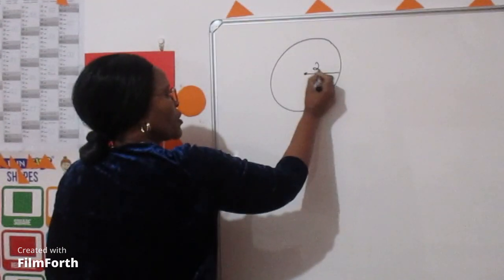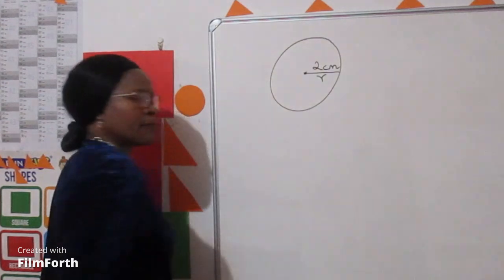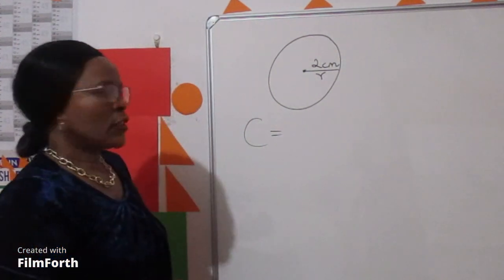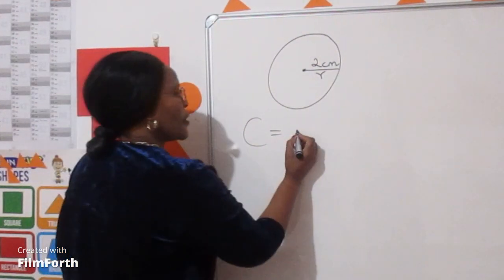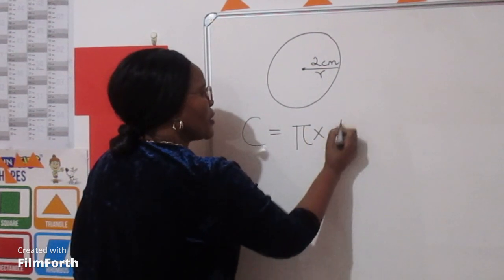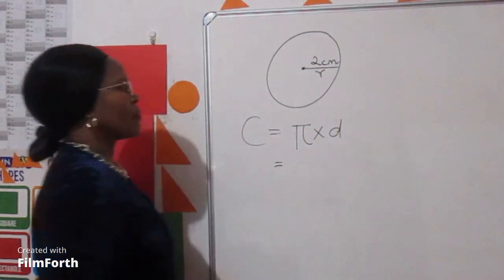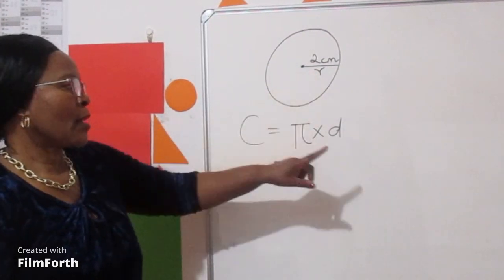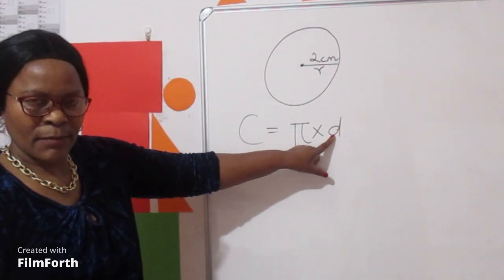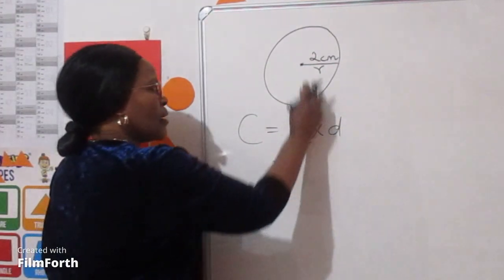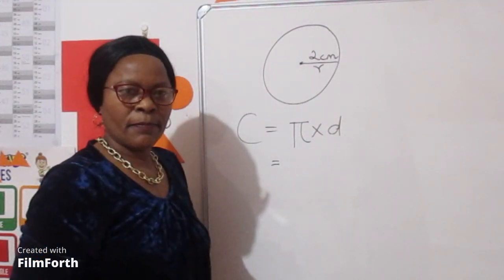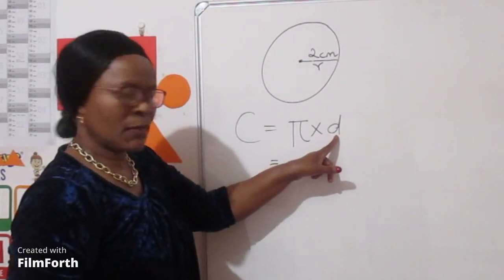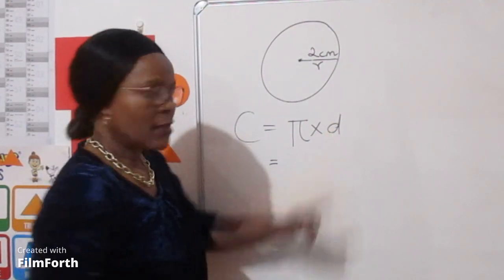Our circle has a radius of 2 centimeters. Let's calculate C. The equation to find C is pi times d. We are given radius but we need diameter. Radius is half of diameter. If 2 centimeters is half of the diameter, it means the diameter is 4 centimeters.